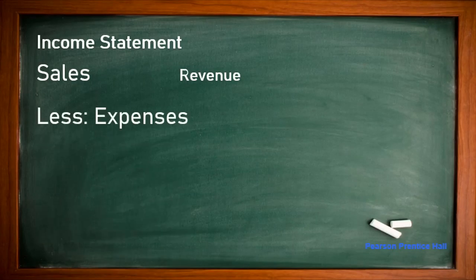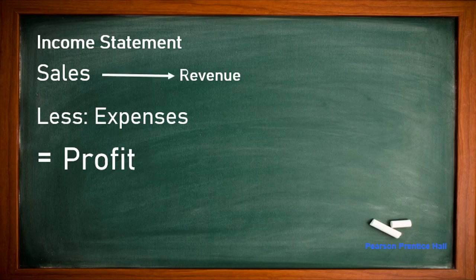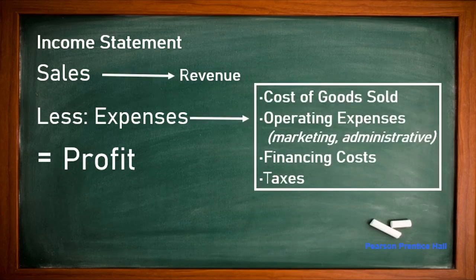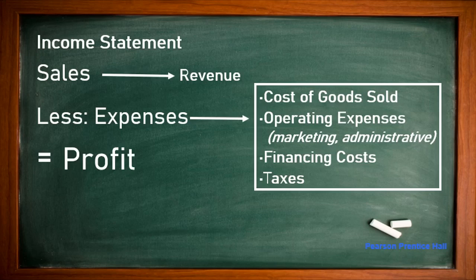The income statement represents: Sales minus Expenses equals Profit. Sales represent revenue; expenses represent cost of goods sold, operating expenses, financing costs, and taxes. Cost of goods sold includes purchasing cost and transportation. Operating expenses include marketing, distribution, and administrative costs. Financing costs are interest paid on loans. Taxes are paid to the government per corporate law.